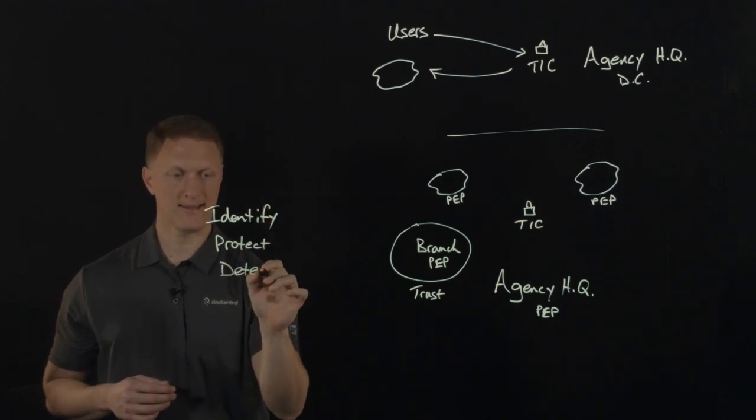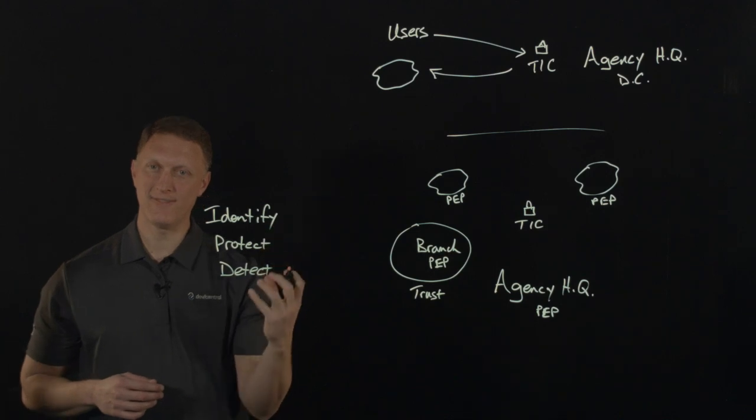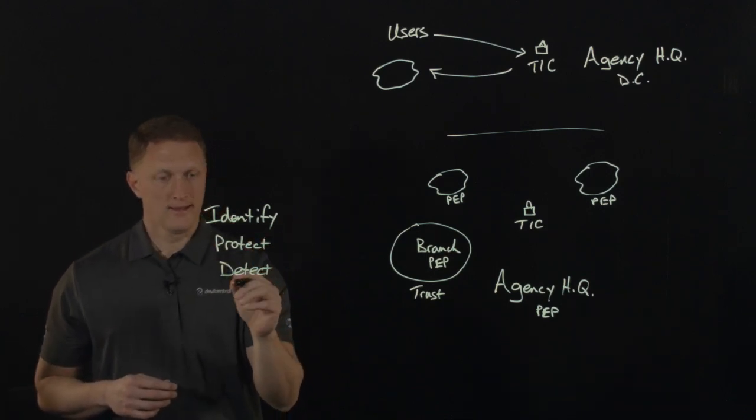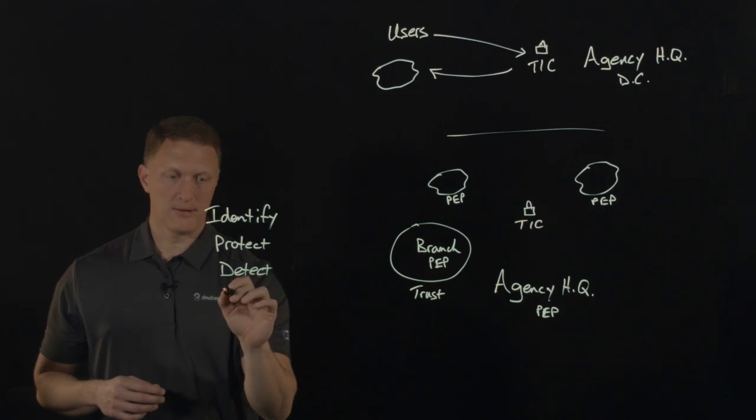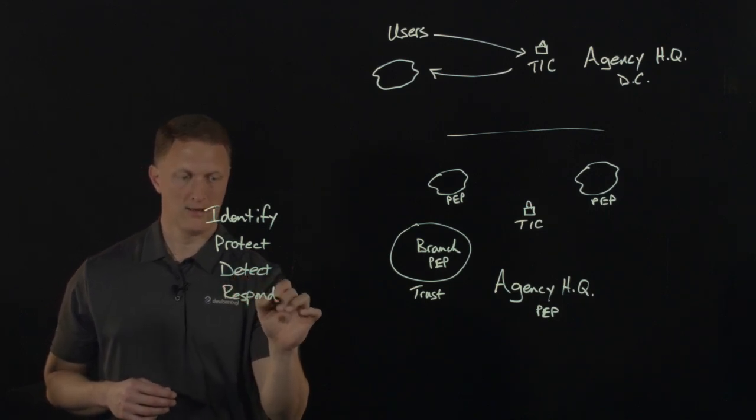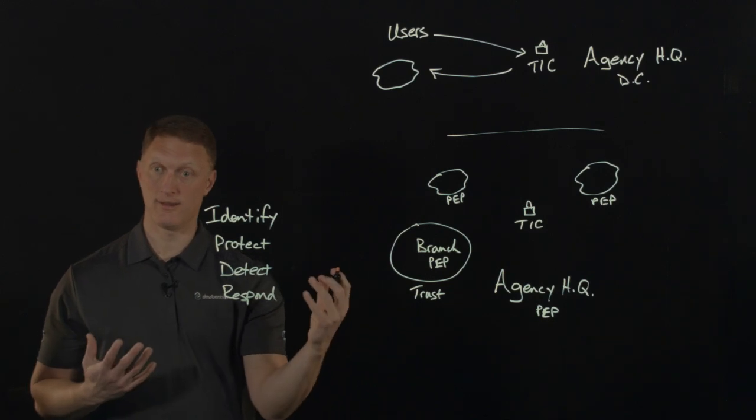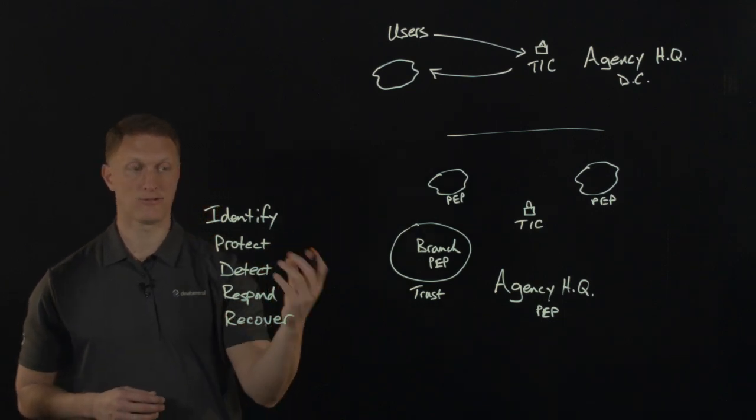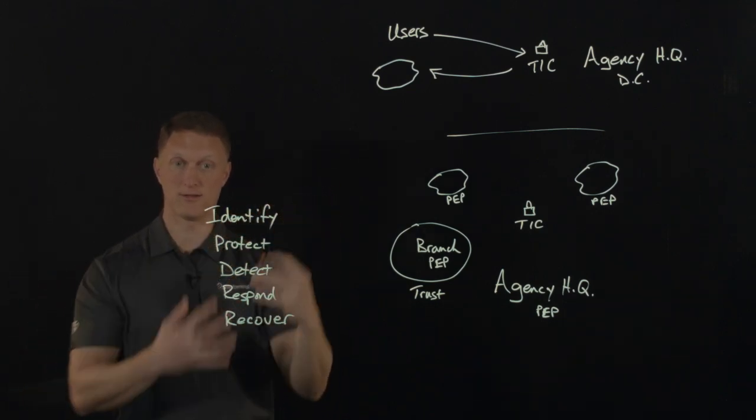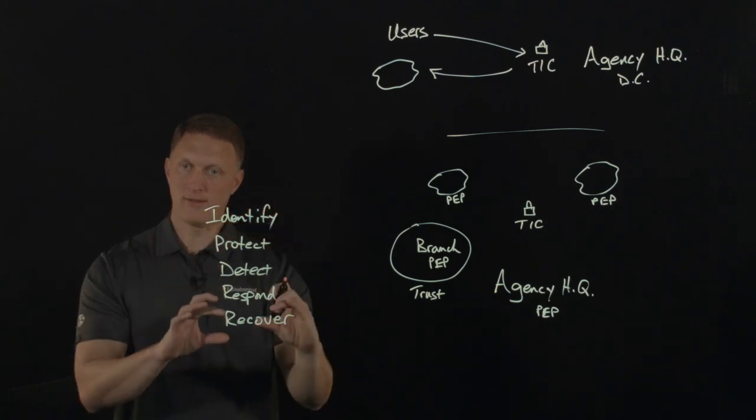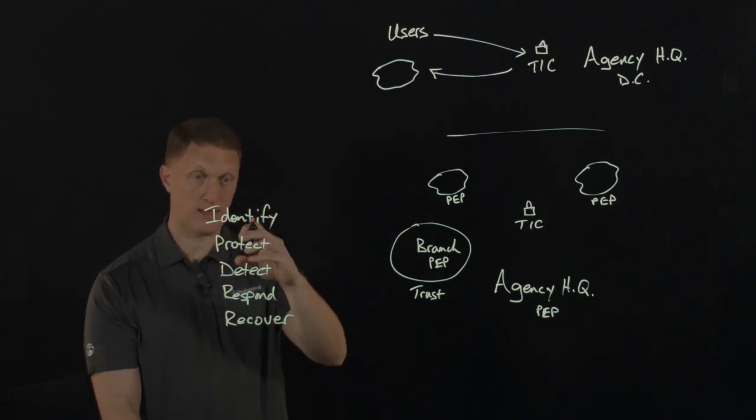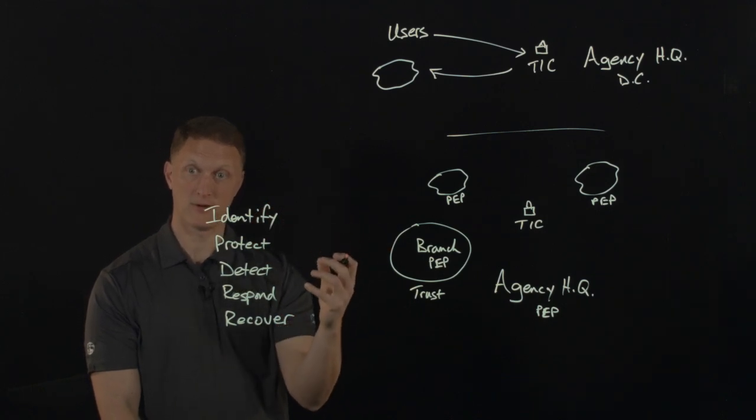The next one after that is detect. So if there's any kind of significant event, then you need to be able to detect that. And then after you detect, you need to be able to respond. So respond to any kind of significant event that happens. And then finally, you need to recover. So you need to be able to have a plan in place to restore systems back to their known good state. So these are the five core functions that are mapped directly to the NIST cybersecurity framework.